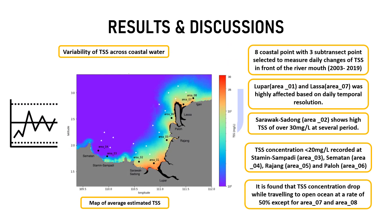The last key point of the results and discussion is the variability of TSS across coastal waters. They further studied the coastal area with three sub-transect points to measure the changes in TSS. It is found that Lupa and Lasa areas were highly affected. The Sarawak area shows high TSS of over 30 mg/L at several periods during the study. TSS concentration also peaks at area 3 until area 6, and TSS concentration drops by driving into the ocean at a rate of 50%, except for area 7 at Lasa and area 8 at Egan.